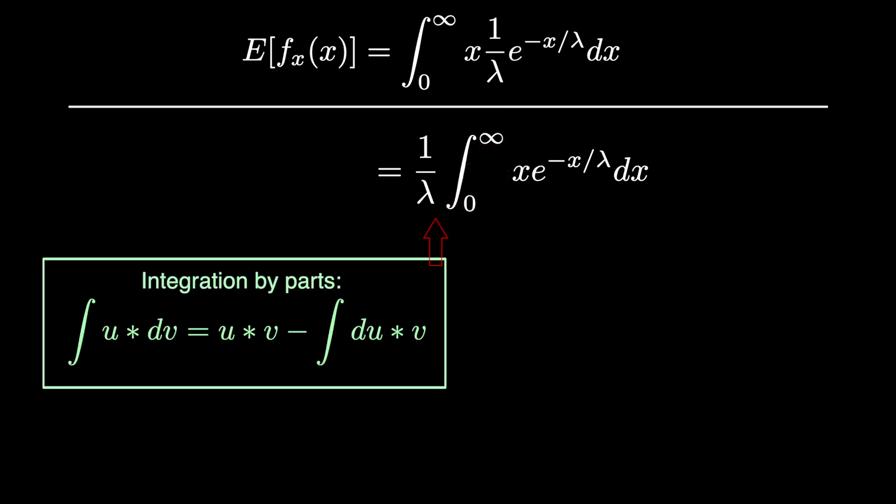Since we have two values of x in our integral, we're going to have to use integration by parts to solve this problem. Pulling straight from our equation above, we can plug in x for u and e to the negative x over lambda for dv.